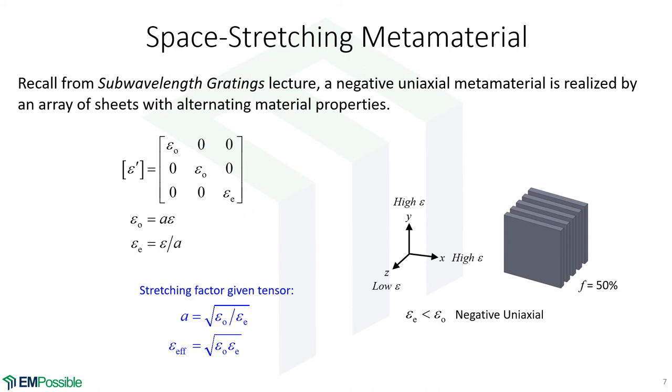So how do we do that with a metamaterial? Well, we do it with alternating layers of different material. So in this case, we have some kind of dielectric, air, dielectric, air, dielectric. Now, in principle, we need to change permittivity and permeability together in these alternating layers.